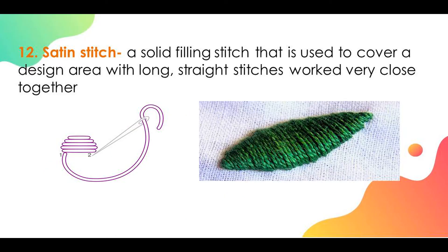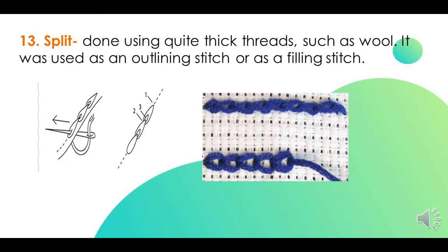Satin stitch. Satin stitch is a solid filling stitch that is used to cover a design area with long straight stitches worked very close together. Split stitch. Split stitch is done using quite thick threads such as wool. It can be used as an outlining stitch or as a filling stitch.